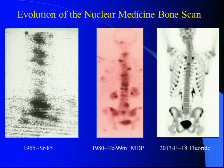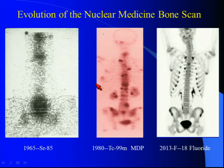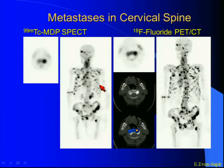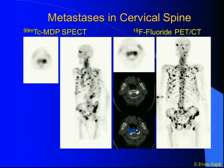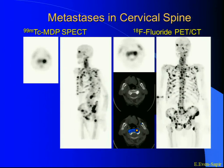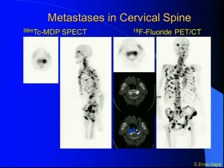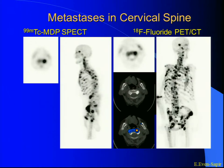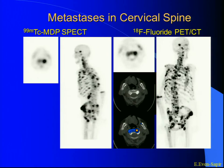Look at the dates here — here's how a bone scan developed, from the old rectilinear scanner through an early camera picture, and now most recently through a much fancier thing called PET scanning. This is what's happened with technology. This unfortunate patient obviously has all bone lesions — the patient had prostate cancer.